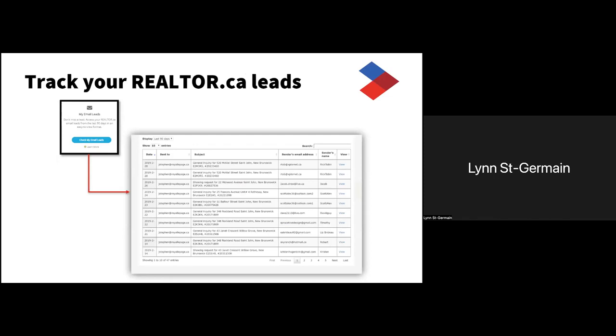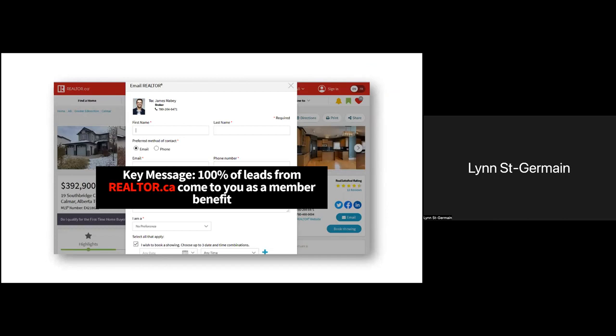On your dashboard you can also track your realtor.ca leads. Whether the leads are coming from realtor.ca directly or any of the DDF partners, you will find all the details necessary to contact your potential clients. You may have lost somebody's email, but you can always come back to the dashboard to find those leads. Importantly, 100% of all leads that come to realtor.ca will come to you as a member benefit — all leads go directly to the listing agent. There are no referral fees and no other agents can buy their way onto your listing pages.